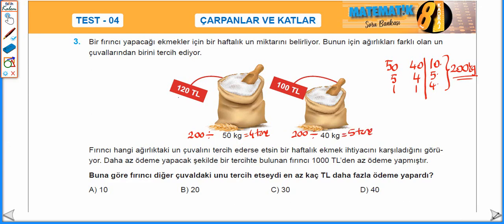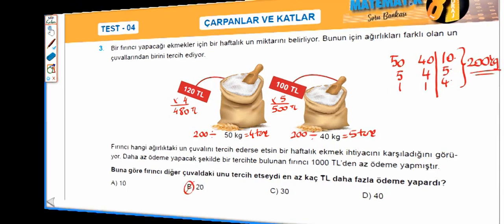4 tane aldığında 120 çarpı 4'ten 480 TL'ye verir. 100 çarpı 5'ten de 500 lira verir. 480 liralık çuvalı tercih ediyor. Eğer 500 liralık çuvalı tercih etseydi 20 liralık daha fazla ödeme yapardı. Yani cevap B.